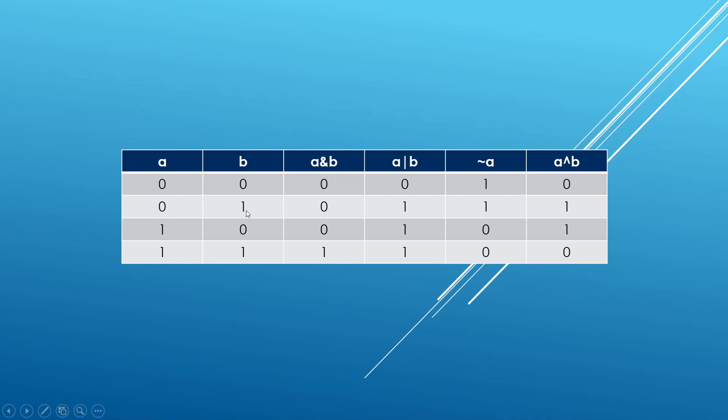If A is zero and B is one, you get a zero. If A is one and B is zero, you get a zero. And if both A and B are ones, you get a one. In other words, if you take two bits and do an AND operation, if one of them is zero you get a zero, and you get a one only if both bits are ones.